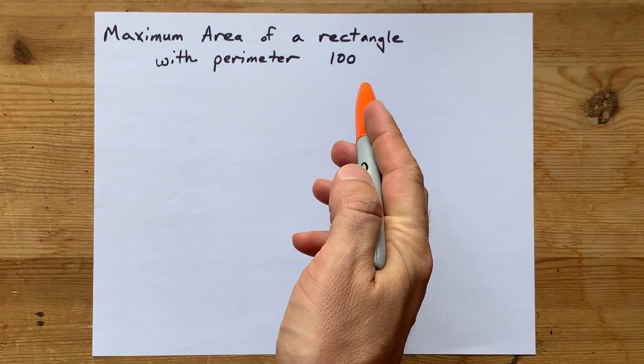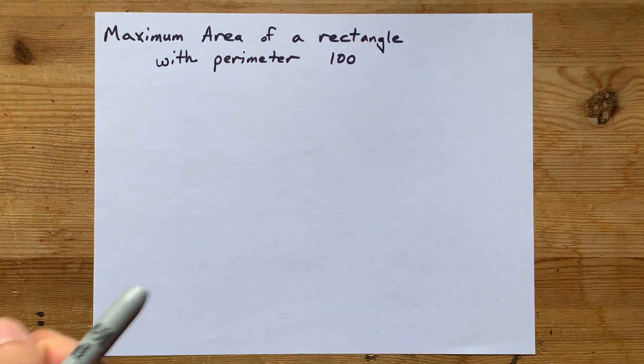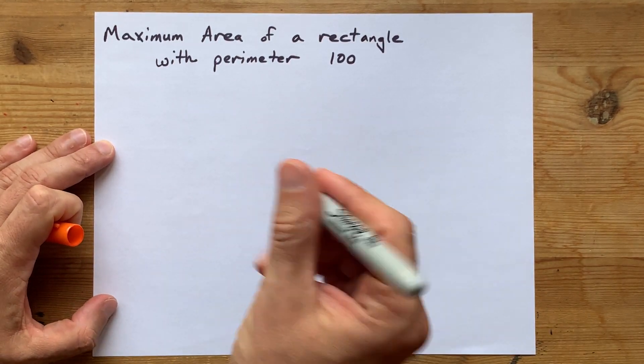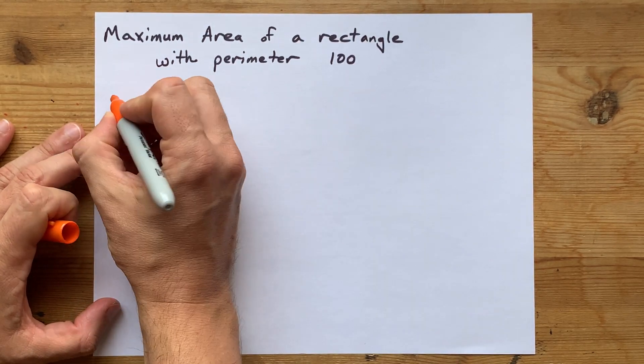What's the maximum area of a rectangle with a perimeter of 100? Now, at the end, I'm going to show you a shortcut for this kind of question, but your teacher probably wants to see you do this the long, quadratic way.